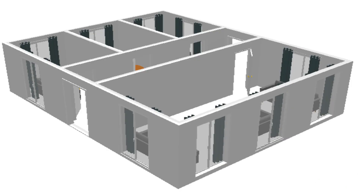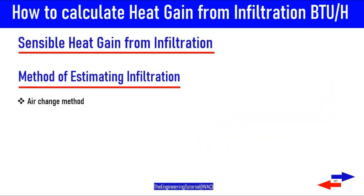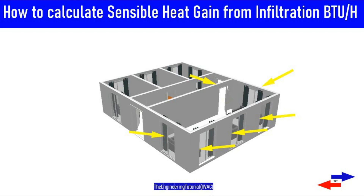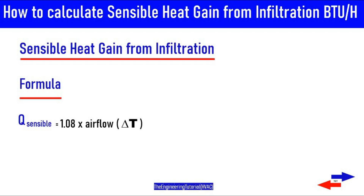For adequate ventilation, in a typical building air leaks into or out of a space through doors, windows, and small cracks in the building envelope. Air leaking into a space is called infiltration. During the cooling season, when air leaks into a conditioned space from outdoors, it can contribute to both the sensible and latent heat gain in the space because the outdoor air is typically warmer and more humid than the indoor air.